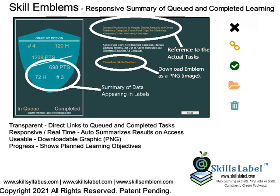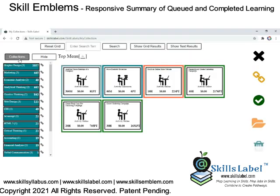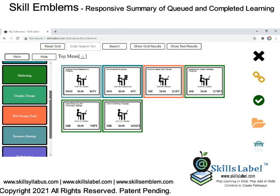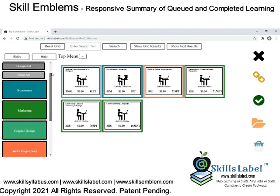This is what it looks like. You can see all the queued and completed work. Here's a page — everything's fully transparent, with links to the actual tasks that they've completed or have in their queue. You can download the emblem and also summarize all the data for the labels.